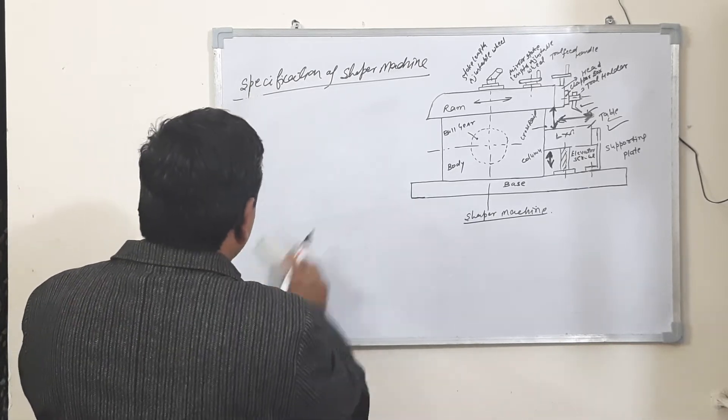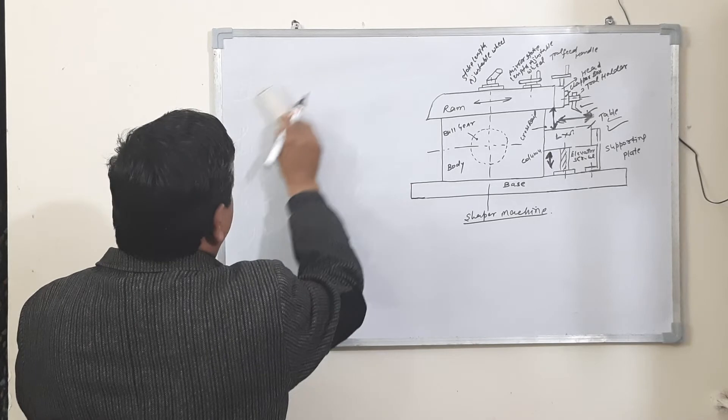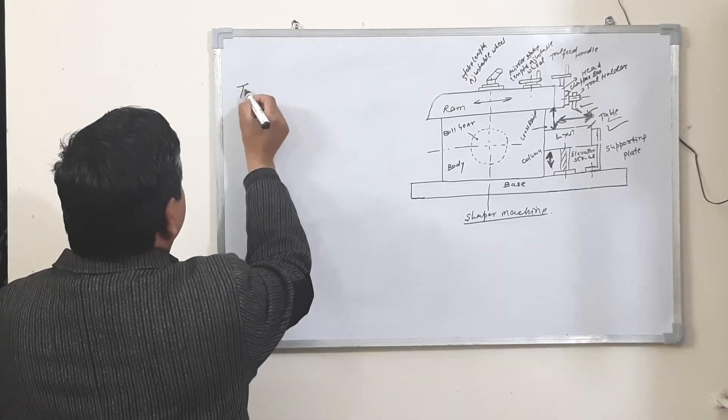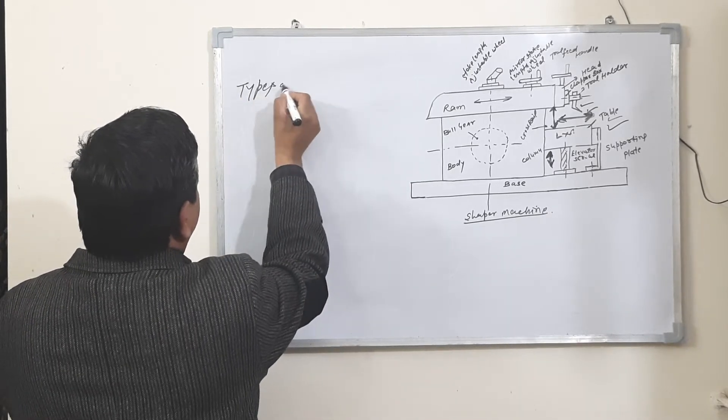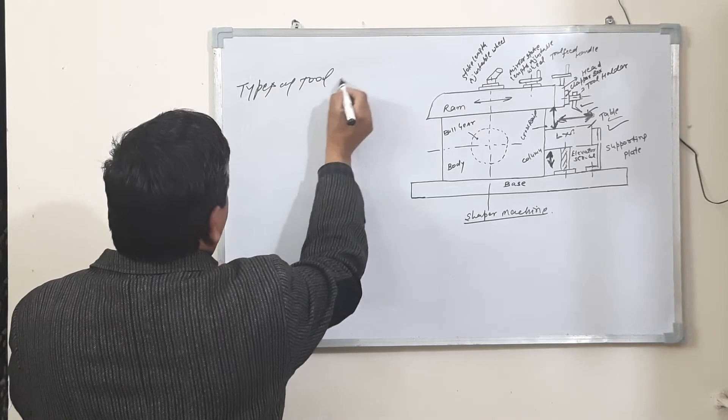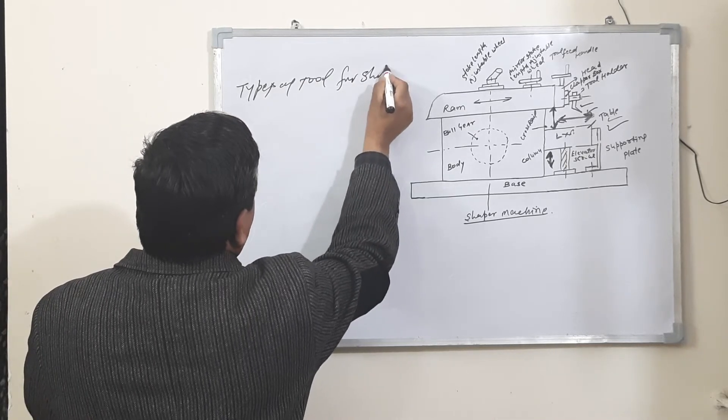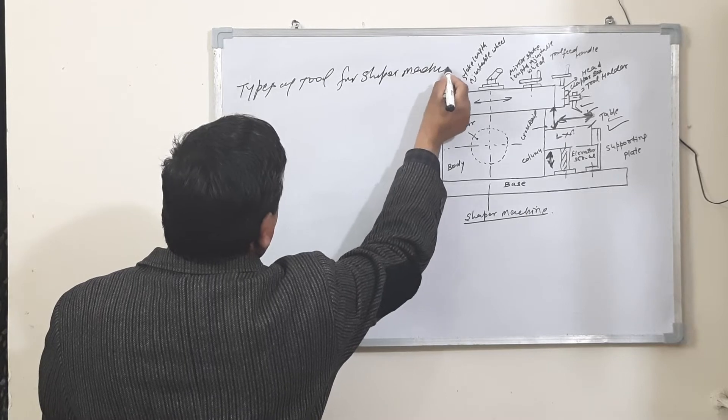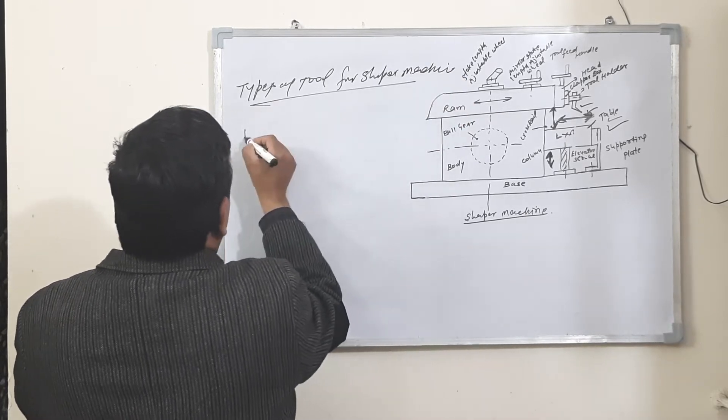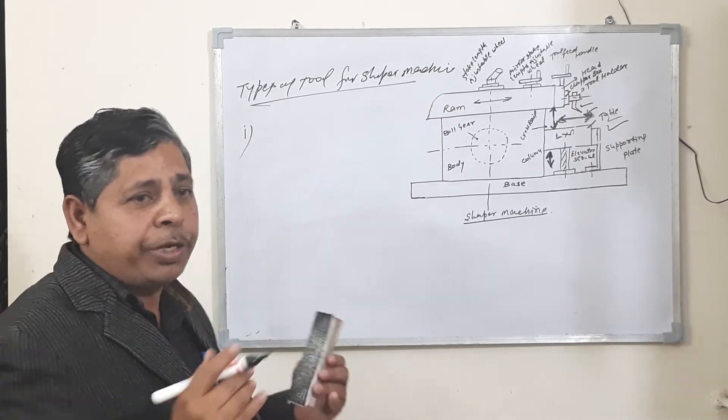Different types of tools are used on a shaper machine. Number one is according to shape.